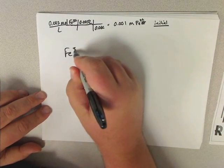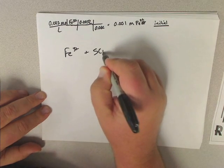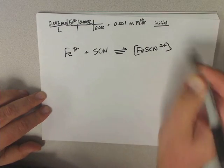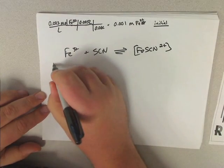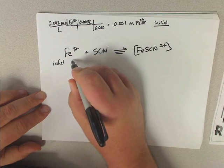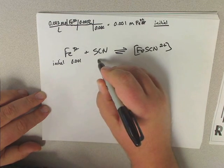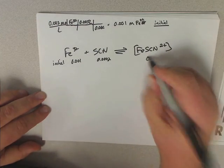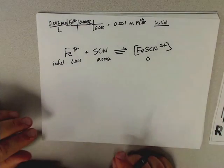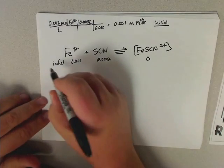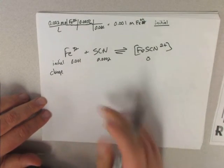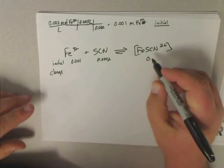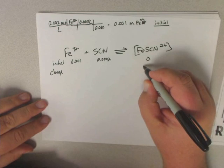We know we have Fe3+ plus SCN- goes in reversible fashion to FeSCN2+. We know our initial concentration of this is going to be 0.001 molar. This is 0.0002, and then this is zero. Then there's going to be some sort of change. In this case, this is what we call the ICE table: initial, change, and then equilibrium.